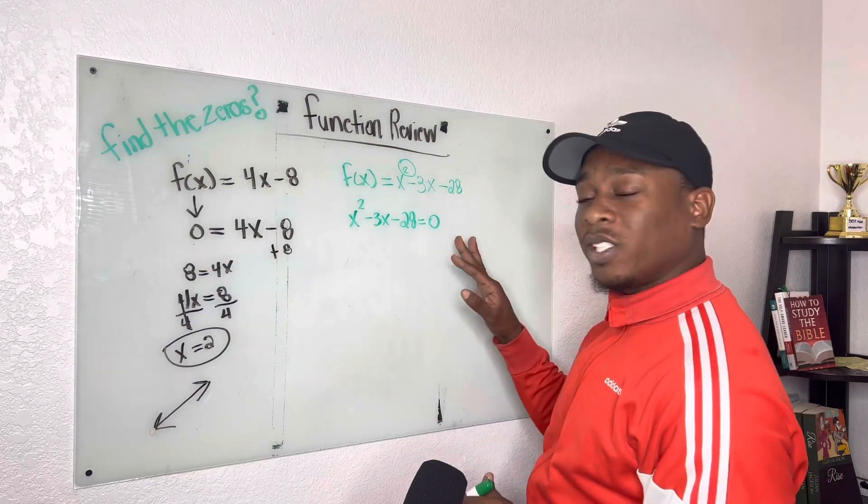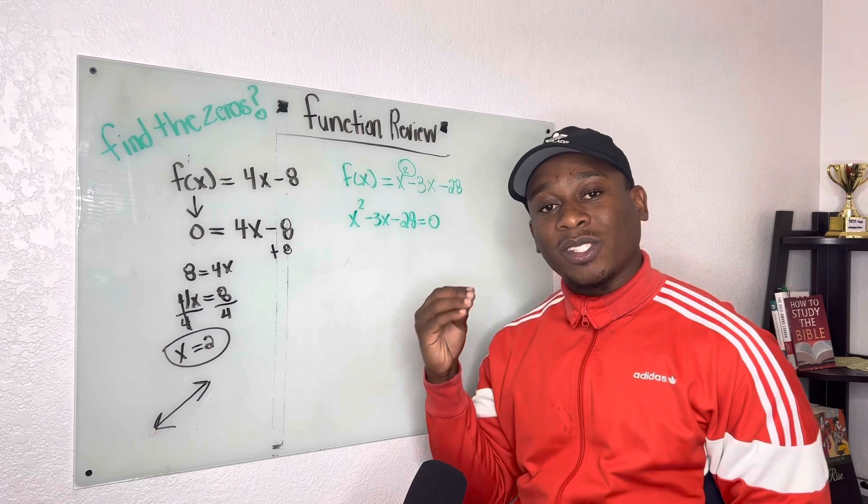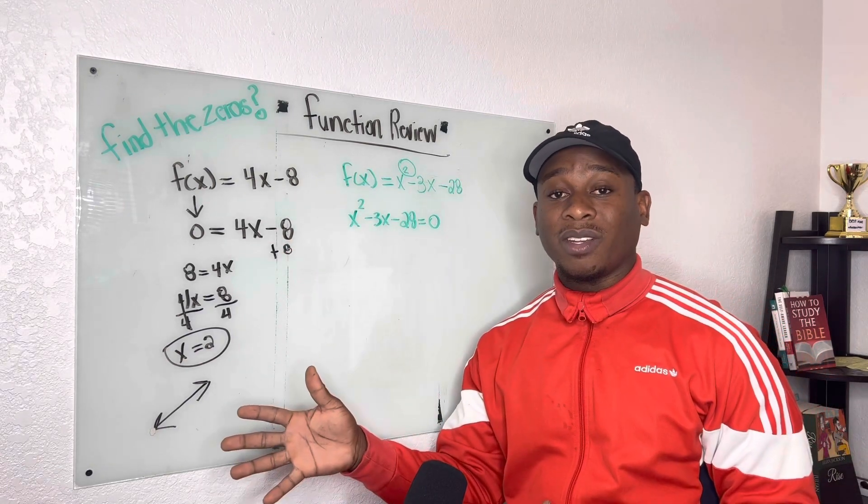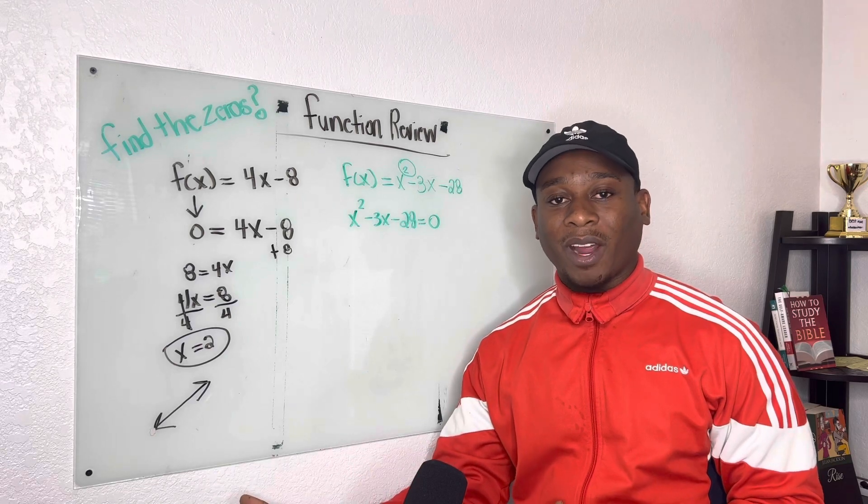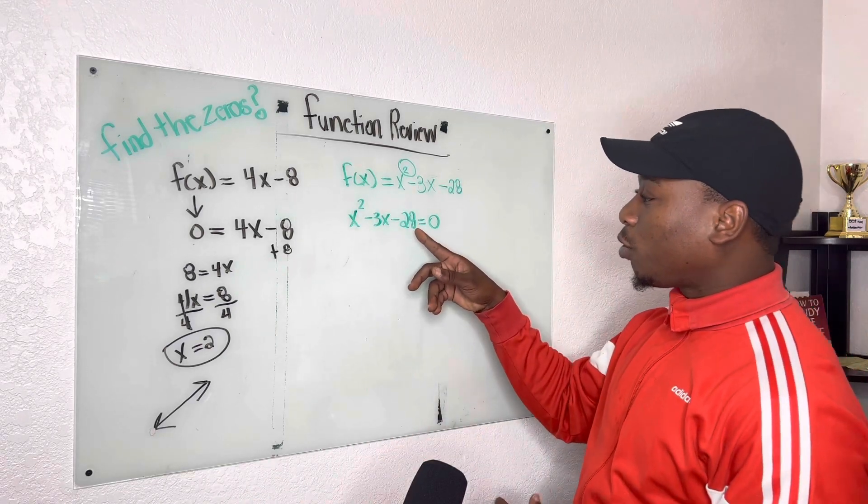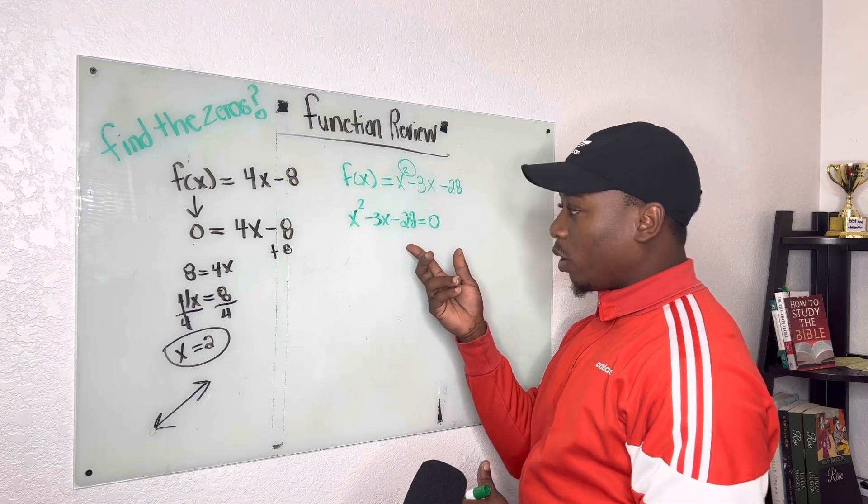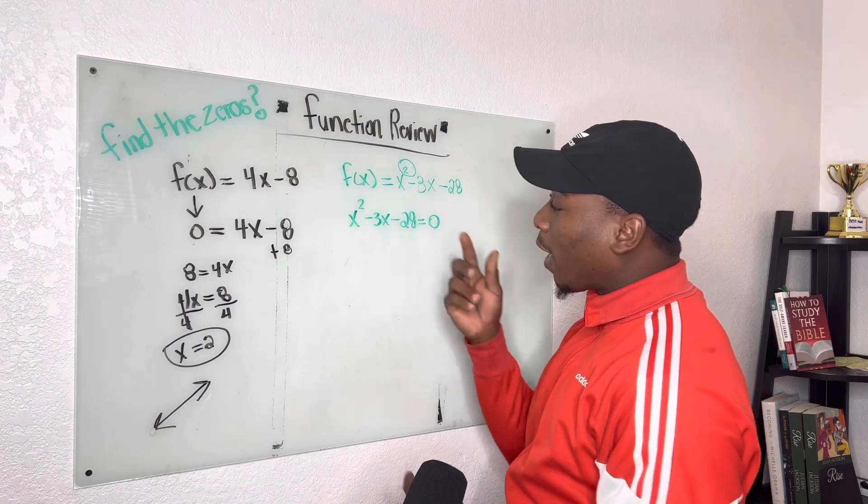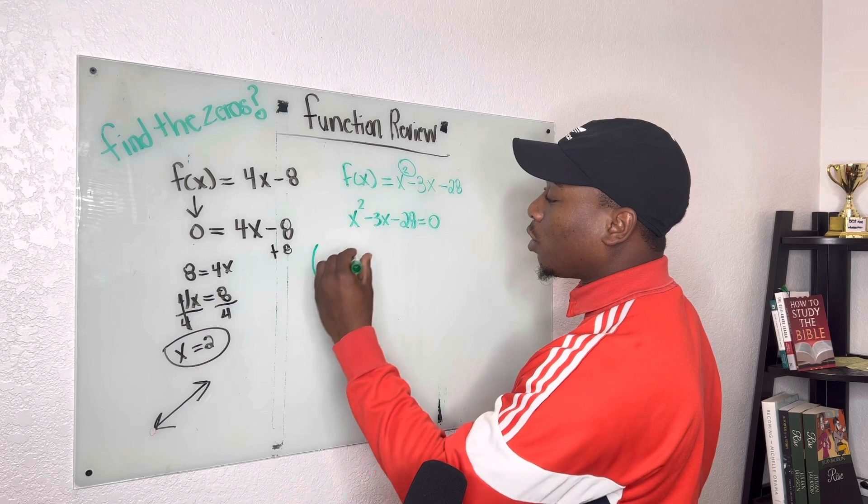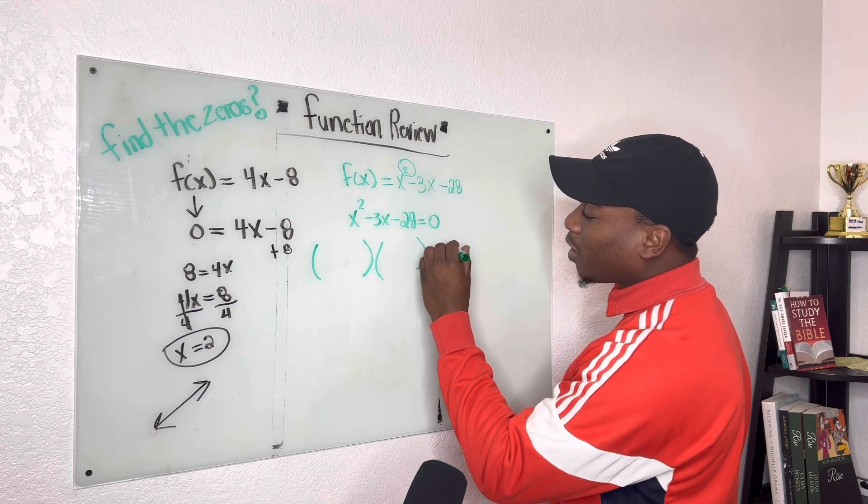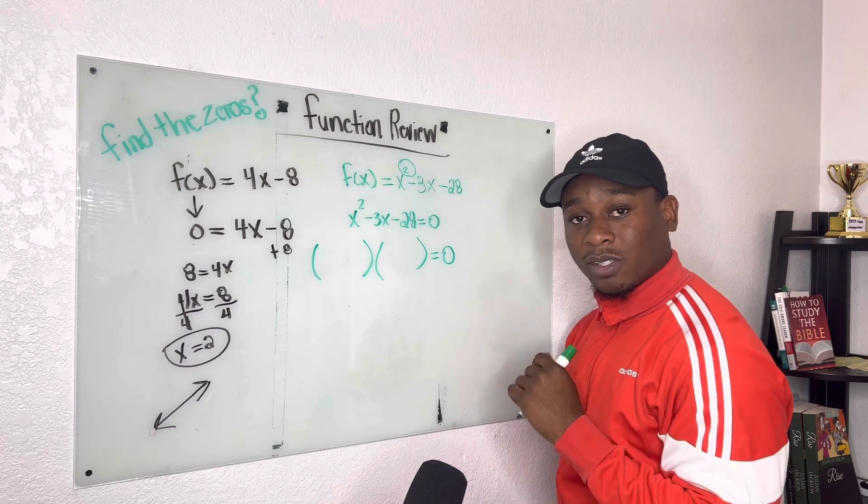But we're going to do the same exact thing. So we have x squared minus 3x minus 28 is equal to 0. I just went ahead, put my 0 at the end. And when we're solving now, we're not going to solve it like a linear equation. We have to factor it. So that means we're looking for two factors that when we multiply, it gives us negative 28, and when we add, it gives us negative 3.